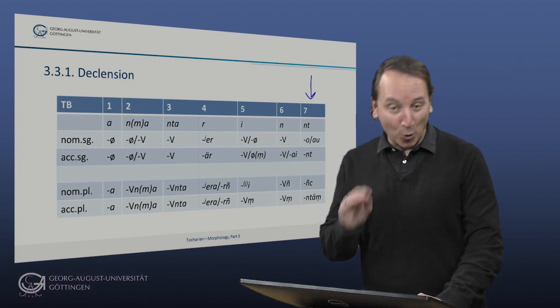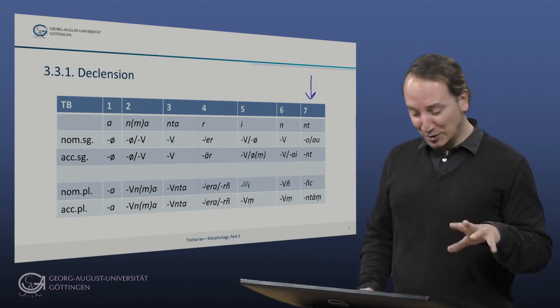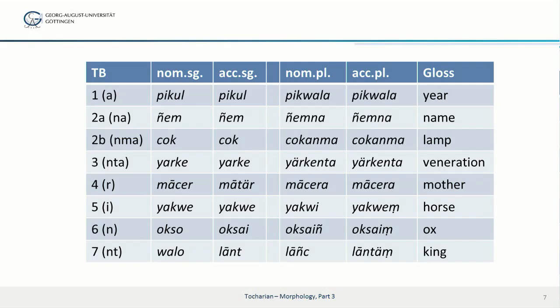To add some bone to the skeleton, we now turn to the next slide where we actually see real words. So have a look. First class represented by the pikkul 'year', and we have the plural pikkwala. Class 2A, this is the na-class represented by ñem 'name', plural ñemña.